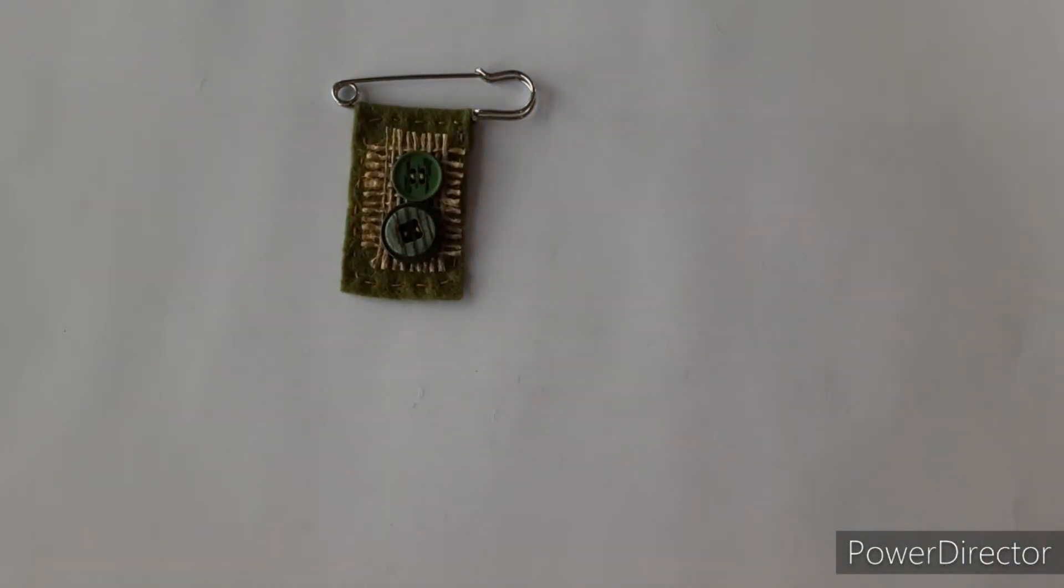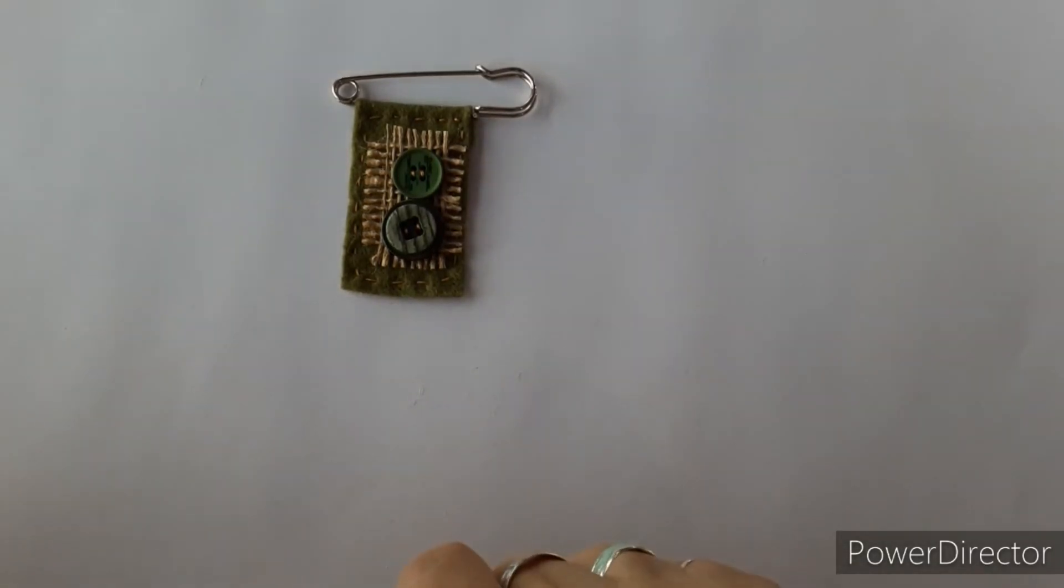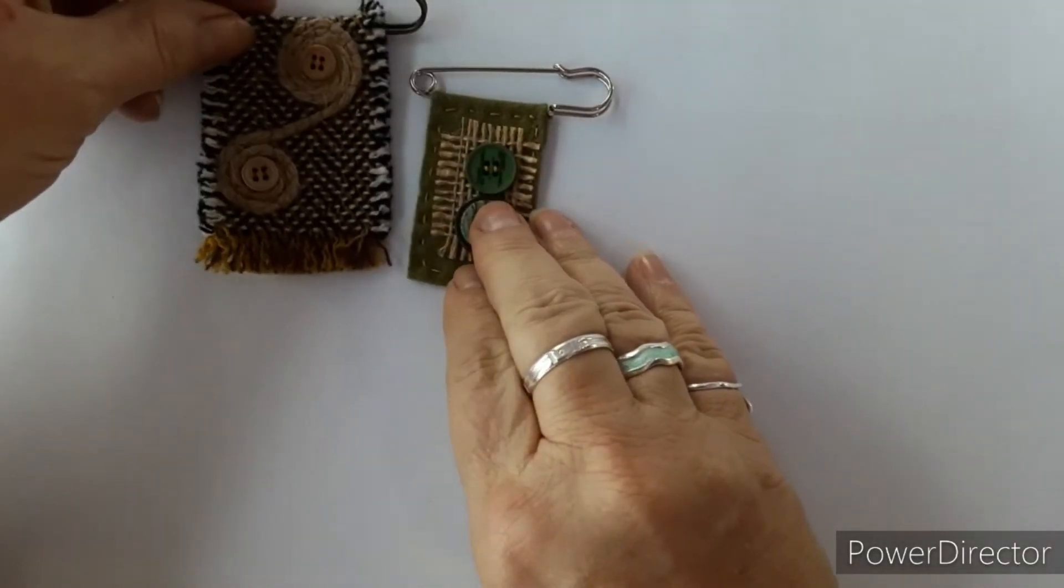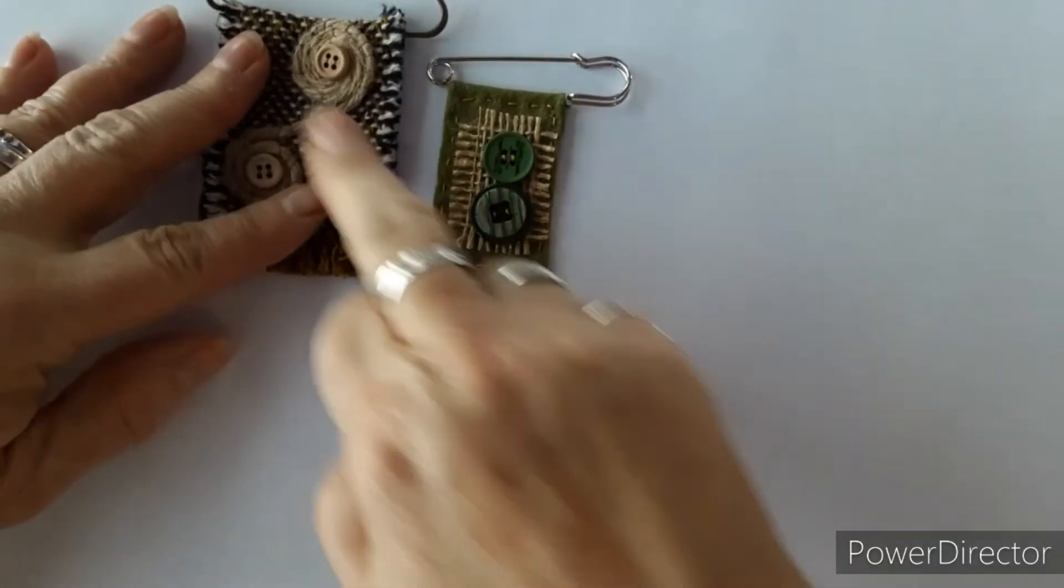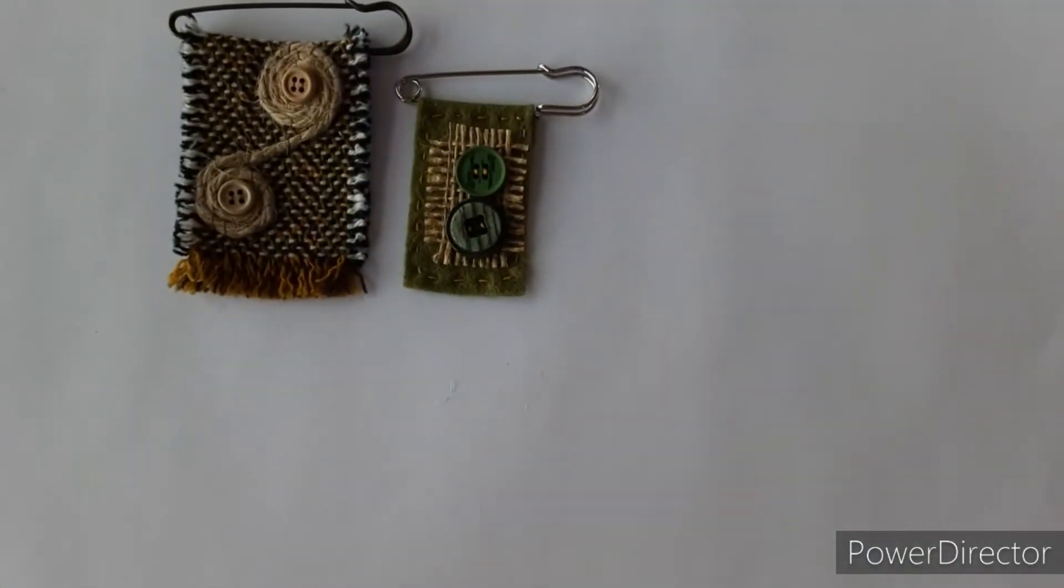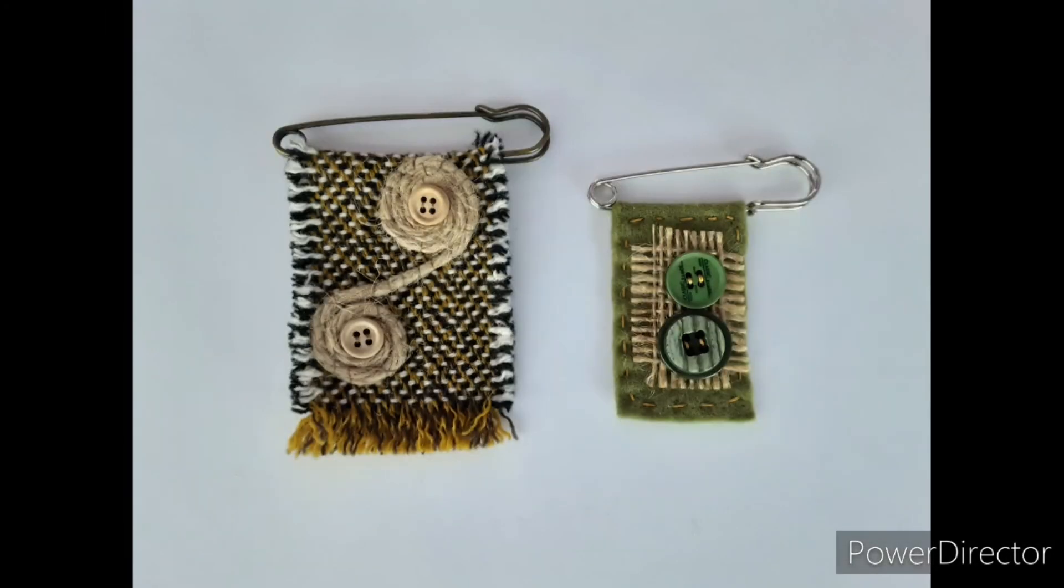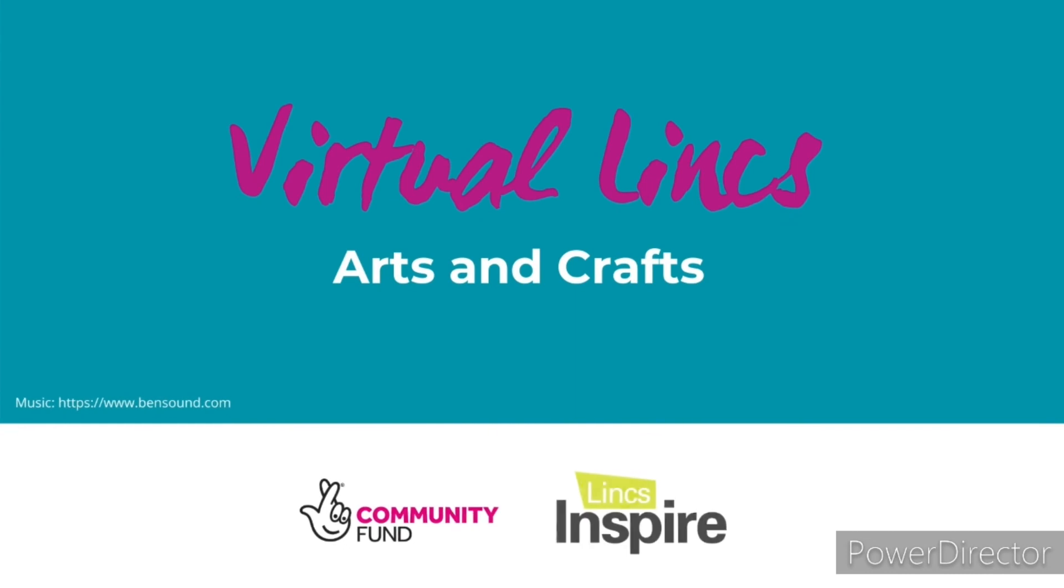A very simple decorative kilt pin brooch. That's another one that I've made. Used a little bit of string there as decoration that I've stitched on, and a couple of buttons. I hope you'll join us again for another simple craft that you can do at home.